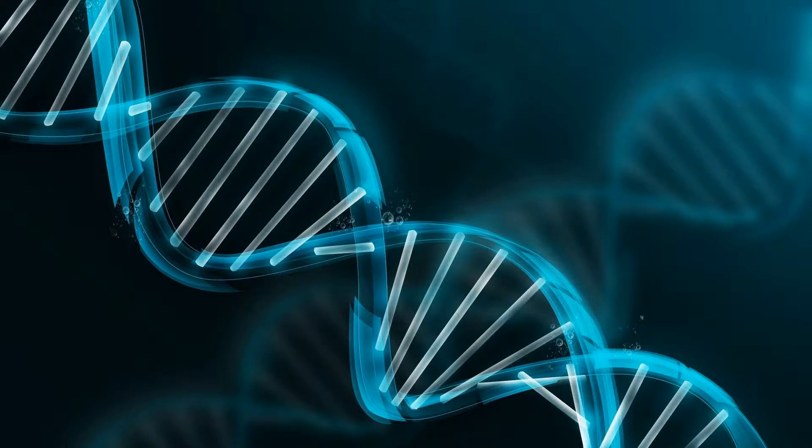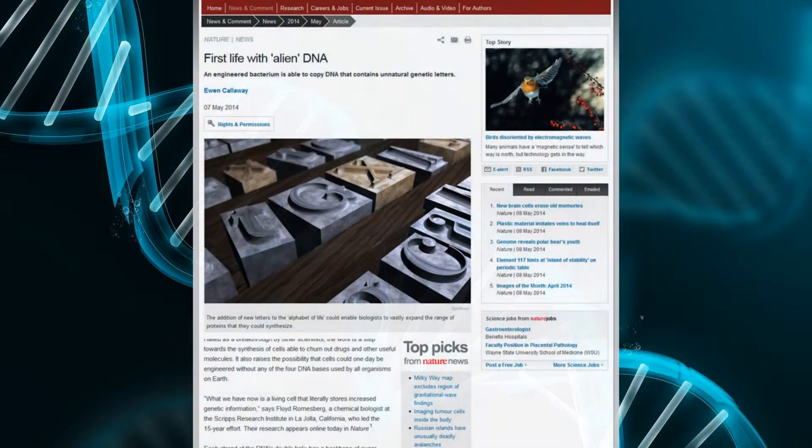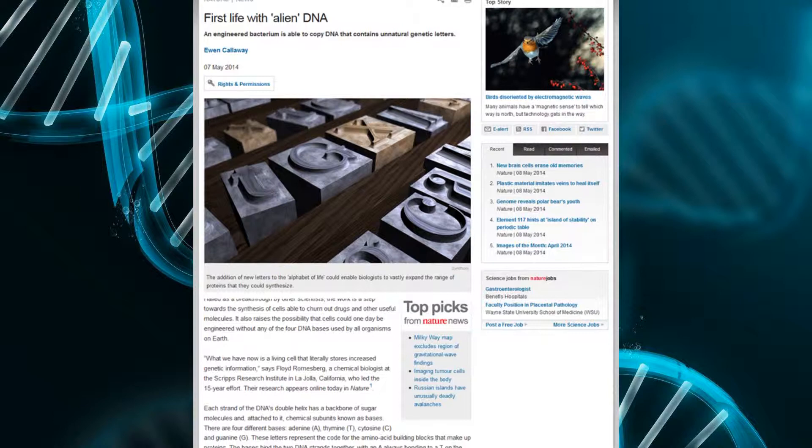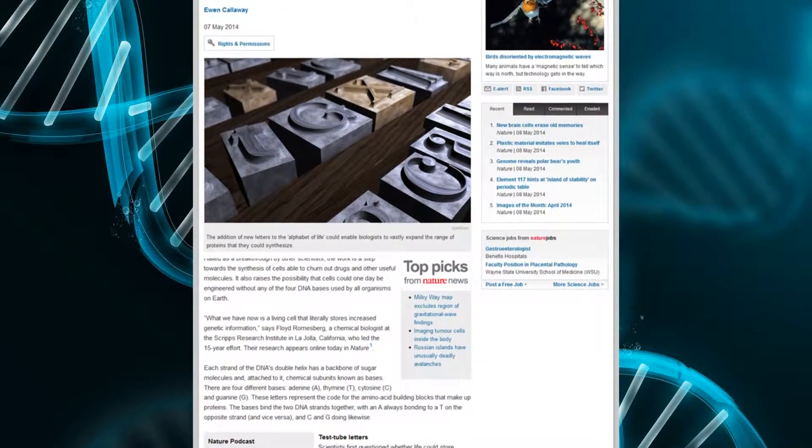Life's alphabet has gained another pair of letters. From plankton to people, all organisms store information in their genome with just four chemicals, represented by the letters A, T, C and G. These DNA letters contain instructions for making proteins and they ensure that our traits are passed on to future generations.